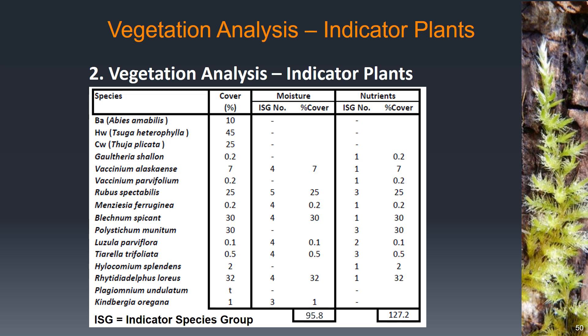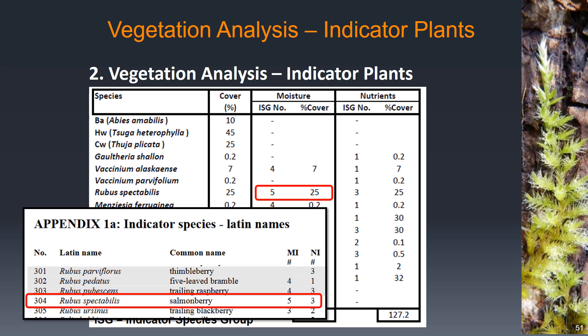For the rest of the species, we'll look them up in the appendix in our field guide. So for Rubus spectabilis, or salmonberry for example, we see that as a moisture indicator it's a member of indicator species group 5, and as a nutrient indicator it's a member of indicator species group 3. So we write down indicator species group 5 for moisture, 3 for nutrients, and then for percent cover we just copy over the percent cover that we measured, in this case 25.